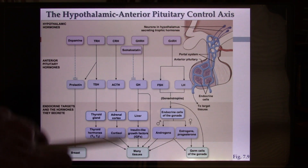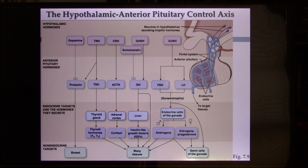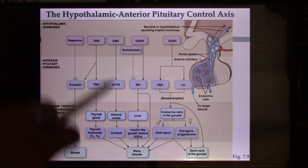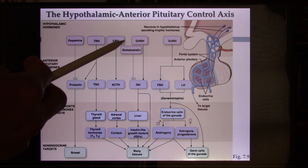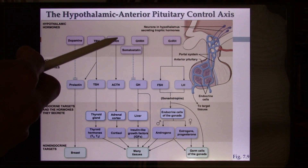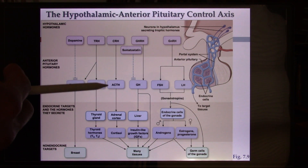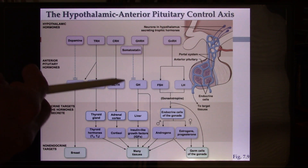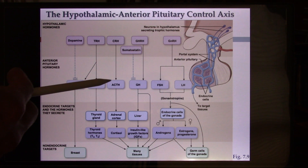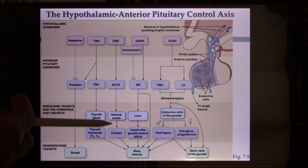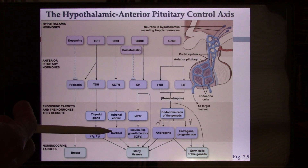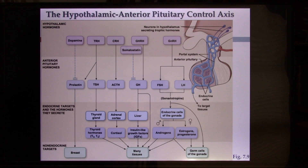Now let's look at the stress hormone pathway. When you see a bear coming towards you, this pathway will be activated. Start from CRH — the hypothalamus releases corticotropin-releasing hormone. It will go to the anterior pituitary gland and trigger ACTH release, which is another traffic hormone. ACTH will go to the adrenal cortex and release cortisol. Cortisol has a lot of functions in the body and will increase your blood sugar level so you are ready to fight.